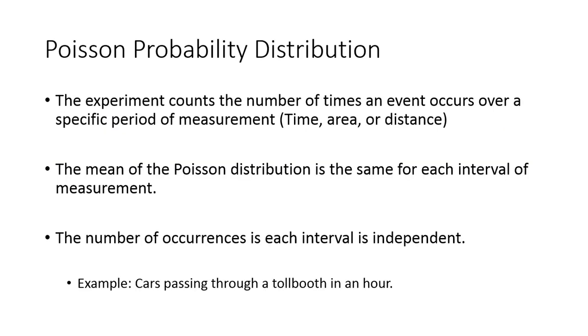Poisson distribution is basically an experiment where you want to count how many times something occurs over a specific measurement. This could be distance, time, an area, how many accidents in a single city, or in this case, the number of visits every minute. Another example would be cars passing through a toll booth every hour. This would change over a certain amount of time, and that's where we're going to use this Poisson distribution.